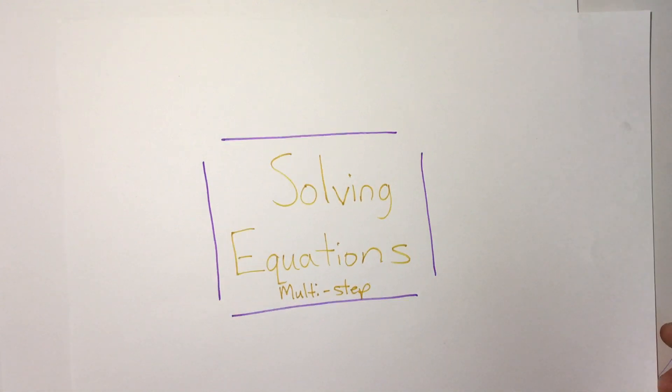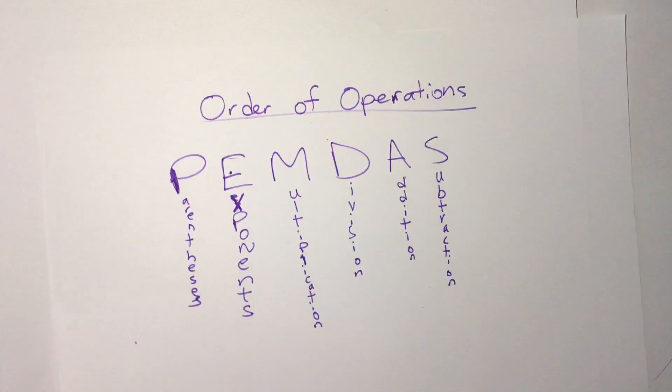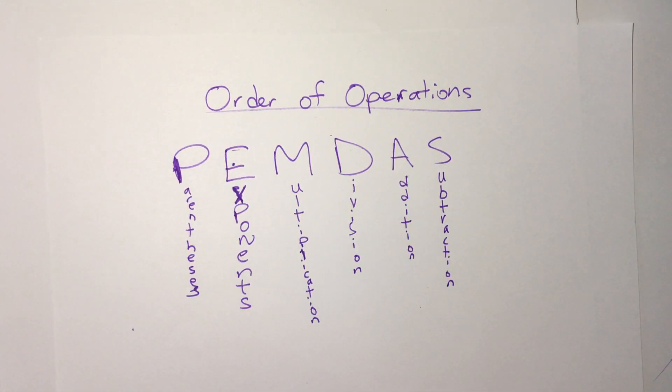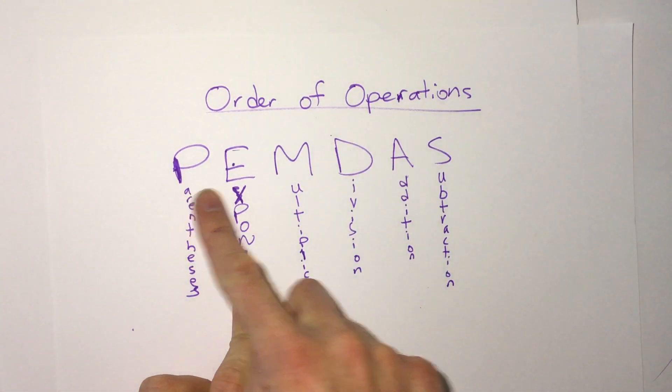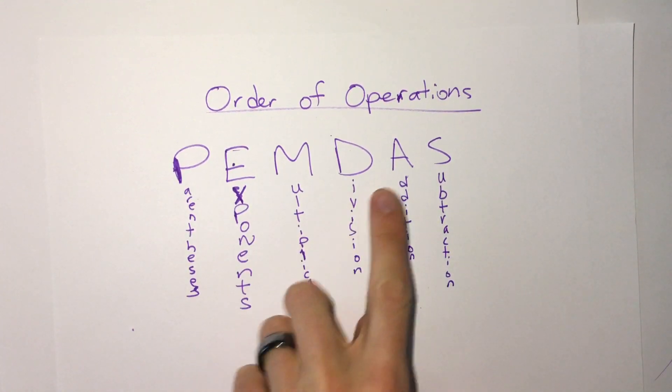Before we look at examples, we're going to review the order of operations. Now remember when we are simplifying any expression or figuring out any number, we use the order of operations PEMDAS, or you may know please excuse my dear Aunt Sally.